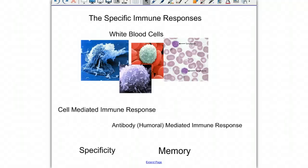The specific immune responses are complex interactions of white blood cells that we call the cell-mediated and antibody-mediated immune responses. The two principles that govern this system are specificity and memory.